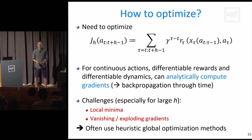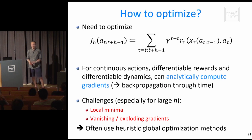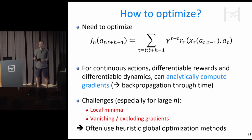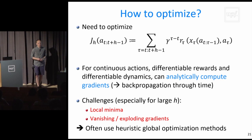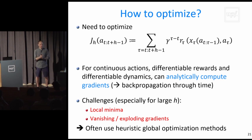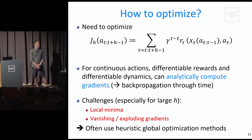A question about discount factors: for now, since we're planning over a finite horizon, the discount factor isn't strictly necessary. We'll add value functions later to account for the infinite horizon. Backprop through time can work analytically, but it has weaknesses — models re-evaluated like recurrent networks suffer from exploding or vanishing gradients, and it may be hard to optimize the full action sequence. In the deep RL setting, people have relied on global optimization methods — black-box methods, evolutionary algorithms — to optimize the action sequence instead.